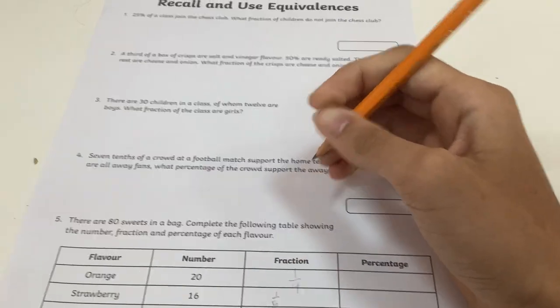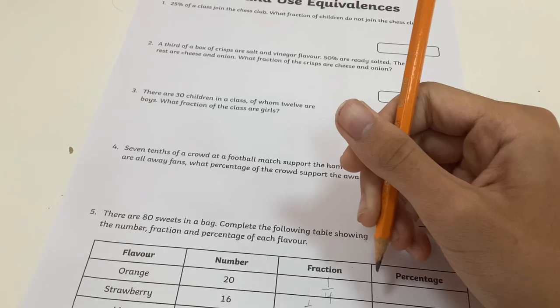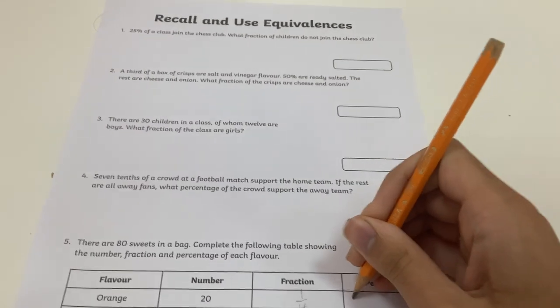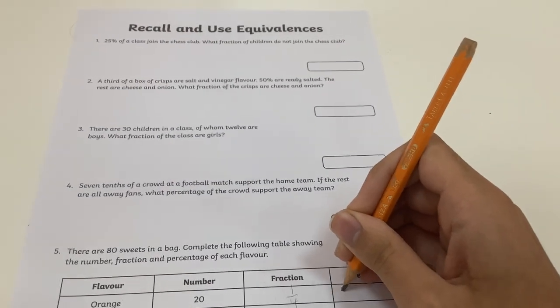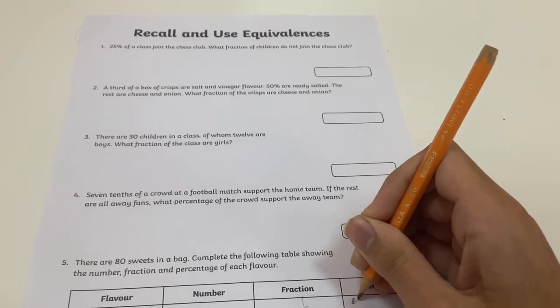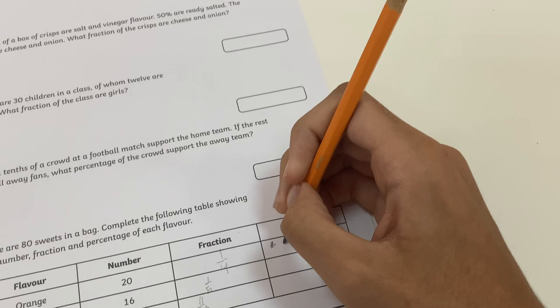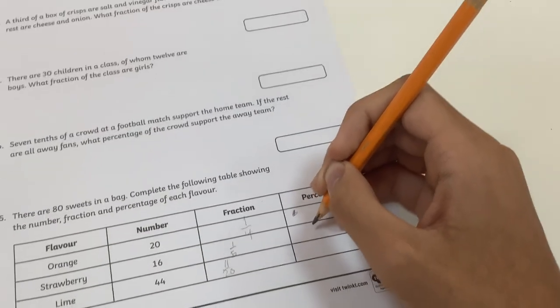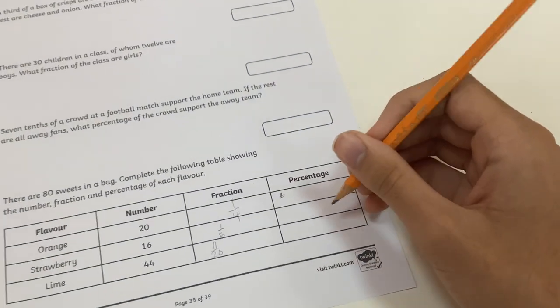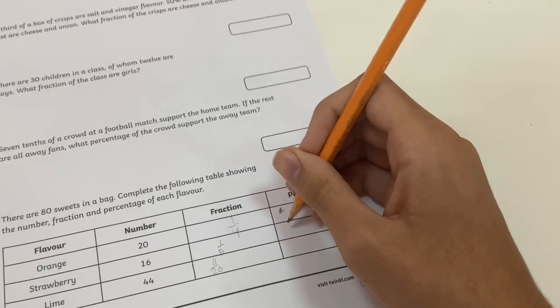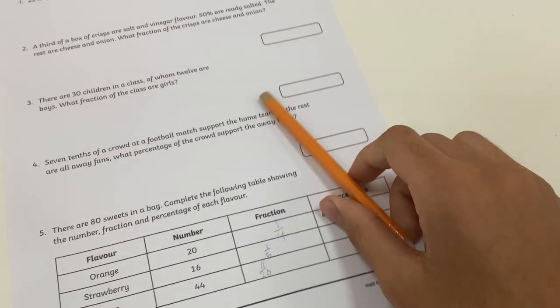And this one, it becomes 20. So this is 25%, and this one is 20%, and this one ends up as 55%.